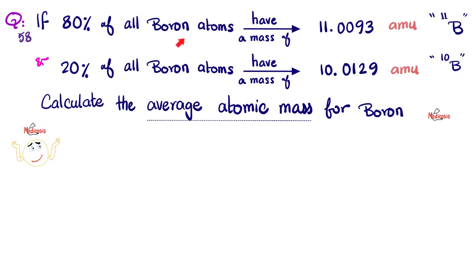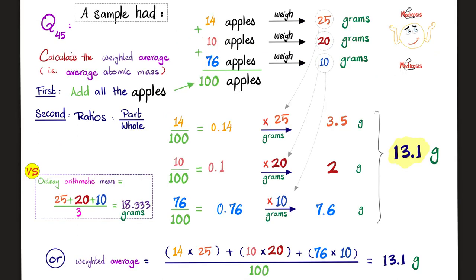Next, if 80% of all boron atoms have a mass of this AMU and 20% of boron atoms have this mass in AMU, translation: 80% of boron in nature is boron 11 and 20% is boron 10. Calculate the average atomic mass for boron please. Pause. We did this before with apples. 14 apples with this weight, 10 apples with this weight, and 76 apples with this weight. Add the apples together you get 100. Then 14 over 100, 10 over 100, 76 over 100. You multiply each type of apples by its weight, then you get an answer. Add them together, you get the weighted average.